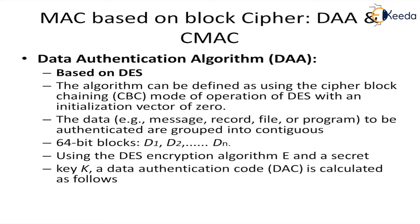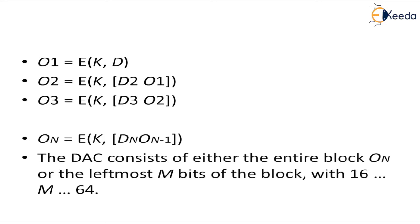The data that is in terms of the message or recorded file or program to be authenticated are grouped into 64-bit blocks D1, D2 up to Dn. Using the DES encryption algorithm and the secret key K, the data authentication code DAC is calculated as follows. O1 is E of K, D1. O2 is E of K, D2 XOR O1. O3 is E of K, D3 XOR O2, likewise up to On equals E of K, Dn XOR On minus 1.